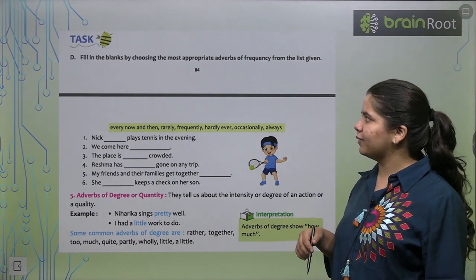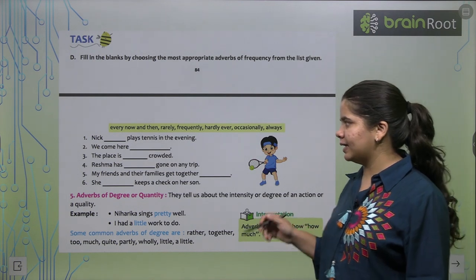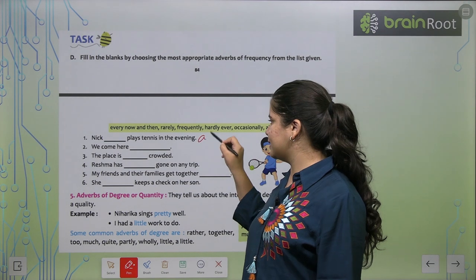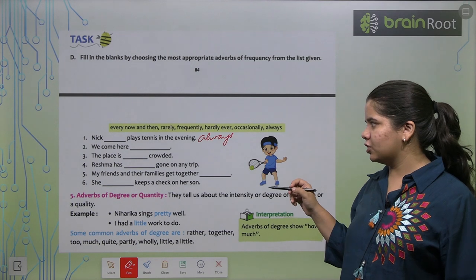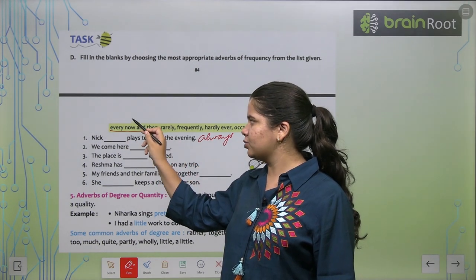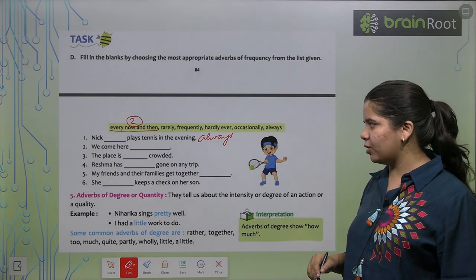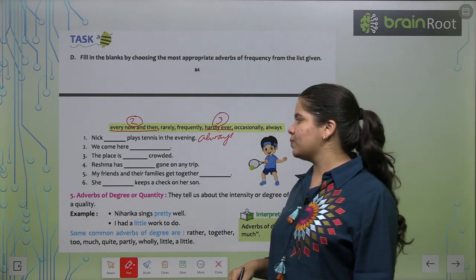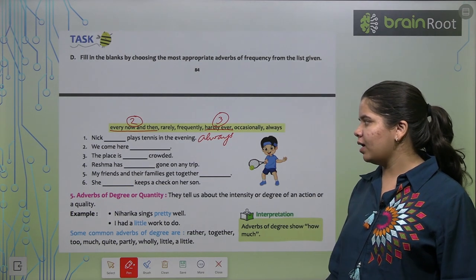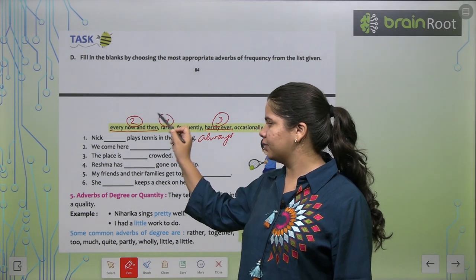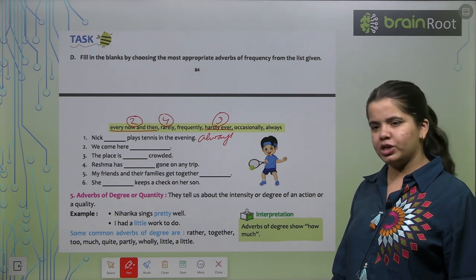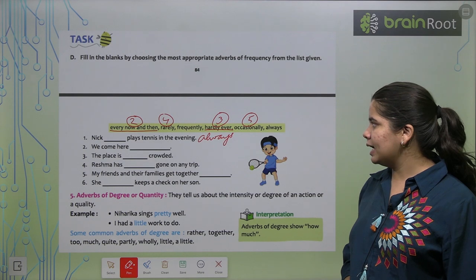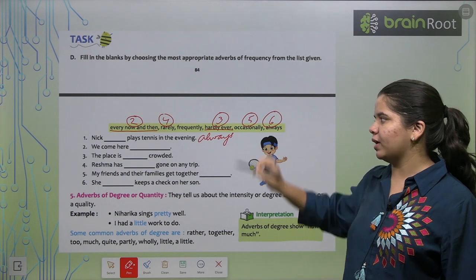Now we have another exercise to fill in the blanks with appropriate adverbs of frequency. Nik always plays tennis in the evening. Second, we come here every now and then. This can be your second one. Next, the place is hardly ever crowded. Third, you can write hardly ever. Next, Reshma has rarely gone on any trip. So this can be your fourth one. My friends and their family get together occasionally. Fifth one, occasionally. Sixth, she always keeps a check on her son. So this can be your sixth one. I hope it's clear.